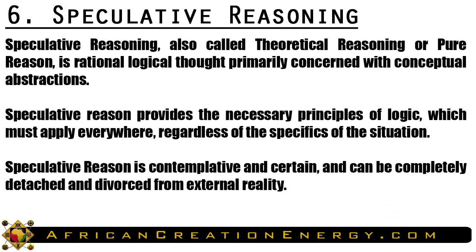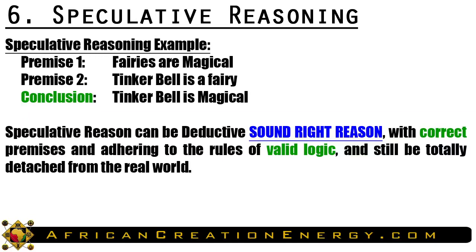The sixth form of reasoning we want to discuss is called speculative reasoning, also called theoretical reasoning or pure reason. It is rational logical thought primarily concerned with conceptual abstractions. Speculative reason provides the necessary principles of logic which must apply everywhere regardless of the specifics of the situation. It is contemplative and certain, and can be completely detached and divorced from reality. Example: Fairies are magical. Tinkerbell is a fairy. Therefore, Tinkerbell is magical. Speculative reason can be sound, right reason with correct premises and valid logic, and still be totally detached from the real world.